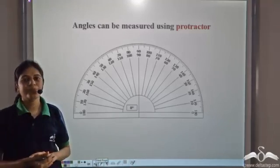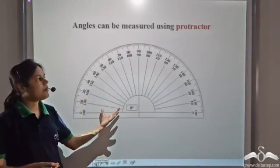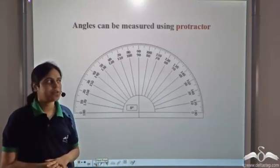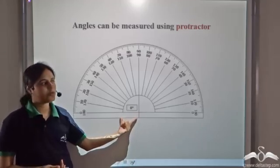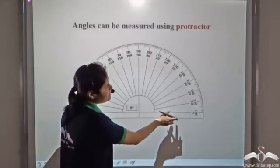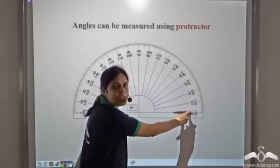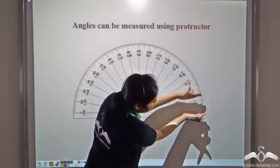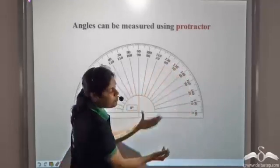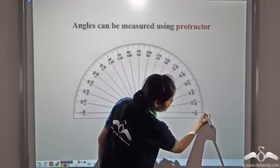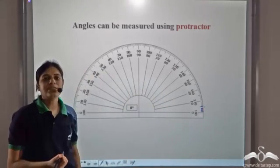We measure an angle using a protractor, and this is how a protractor looks. You can see several divisions on this protractor. From here to here it is 0 to 10 — this distance is 10 degrees. Again, from 10 to 20 is 10 degrees. And these small divisions represent 1 degree.